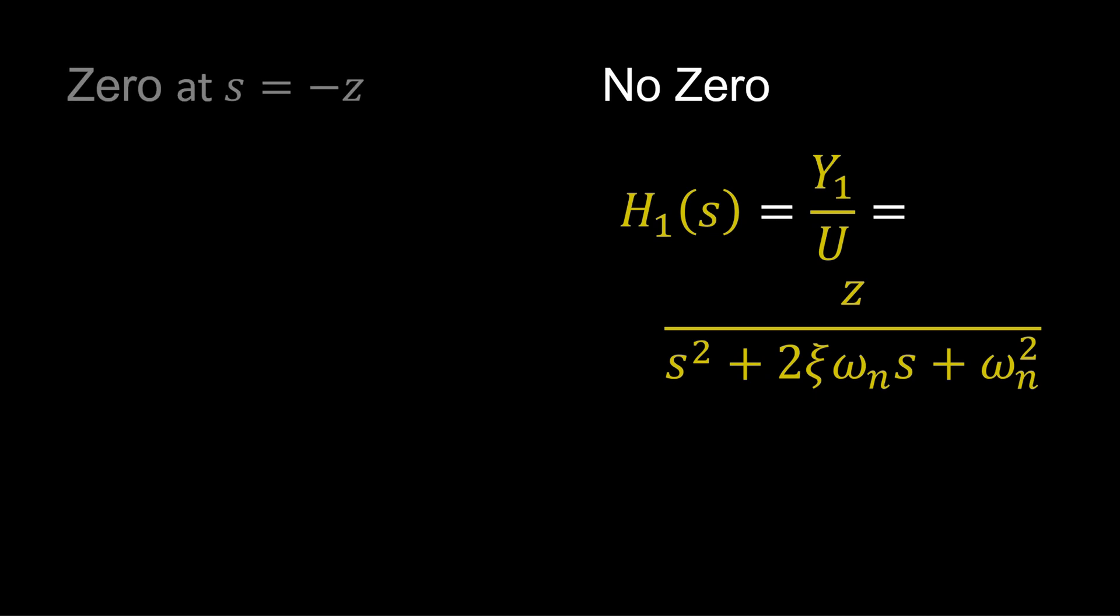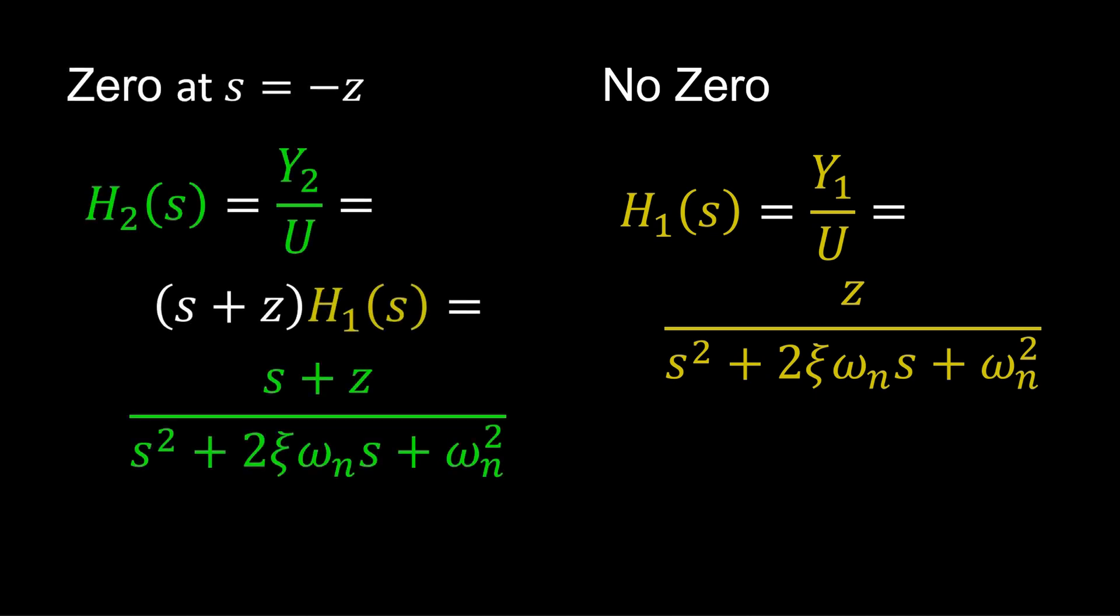We now have come full circle from frequency domain to time domain and back. This allows us to understand the effect of the zero on the transient response from multiple perspectives.